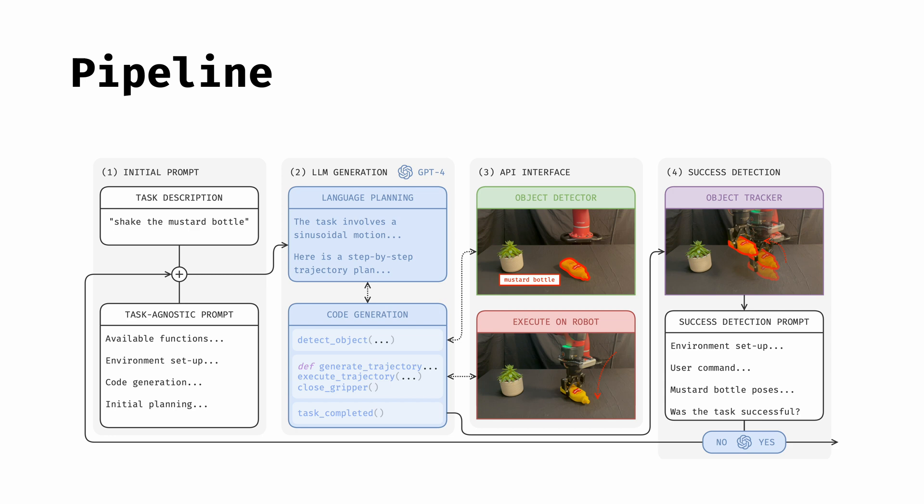If not, then the LLM proceeds to re-plan the task with an alternative trajectory to execute on the robot.